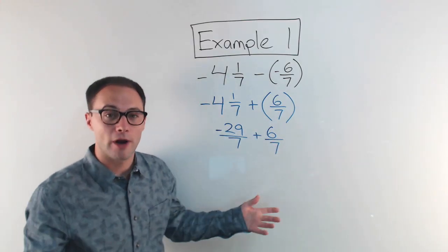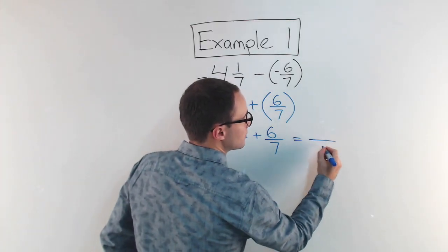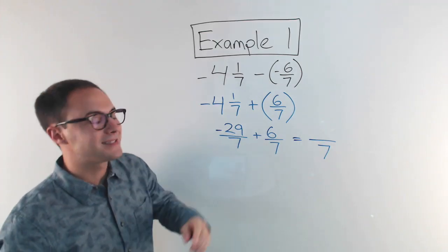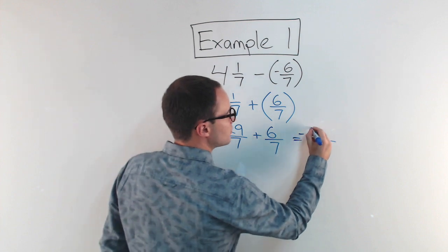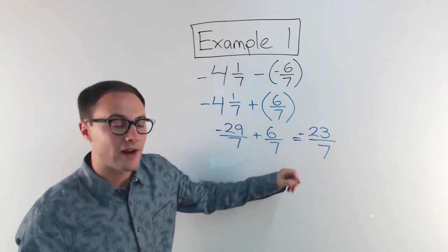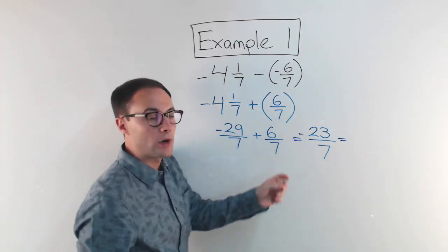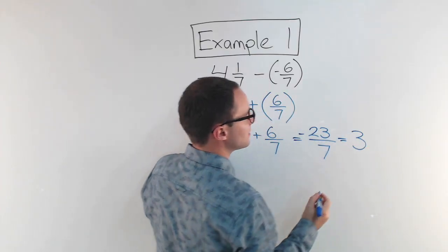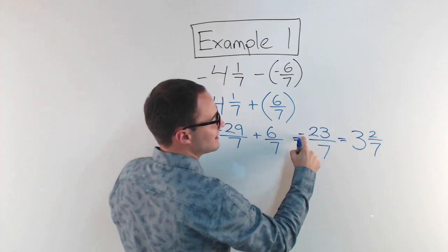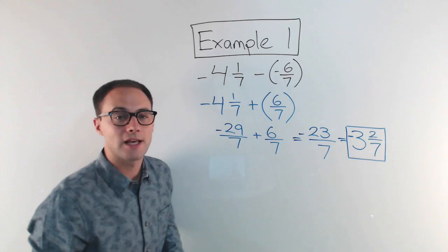Denominators are the same, which is great. So all I need to do is add the numerators. So the denominator does not change. Negative 29 plus 6 is negative 23 over 7, which is an improper fraction. So I'm going to convert it back to a mixed number. 7 into 23 goes 3 times, and I would have 2/7 left over. And I have to remember it's negative. So that is negative 3 and 2/7.